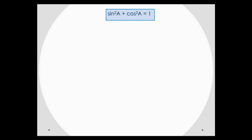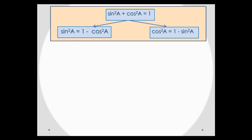Now, if we make use of the fact that sine squared a plus cos squared a is equal to 1, and rearrange that so that sine squared a is the subject, we find that sine squared a is 1 minus cos squared a. And if we rearrange so that cos squared a is the subject, we find that cos squared a is equal to 1 minus sine squared a.